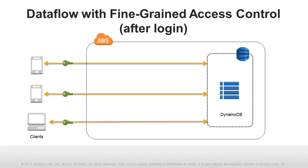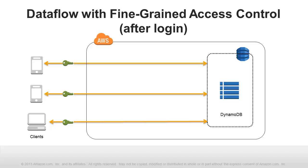Fine-grained access control is ideal for use in mobile applications that use social identity providers. Web Identity Federation allows users to authenticate with public identity providers, such as Login with Amazon, Facebook, or Google. The combination of Web Identity Federation and fine-grained access control can mean there is no longer a need for proxy servers. Use of Web Identity Federation is not required; application authors may also implement fine-grained access control policies using IAM users and groups.